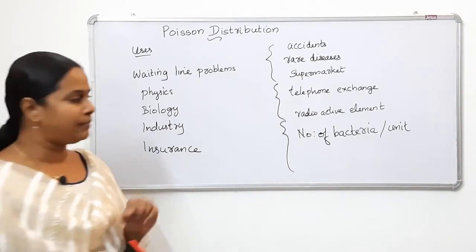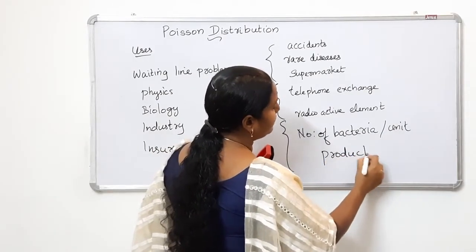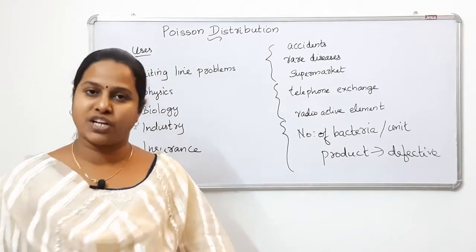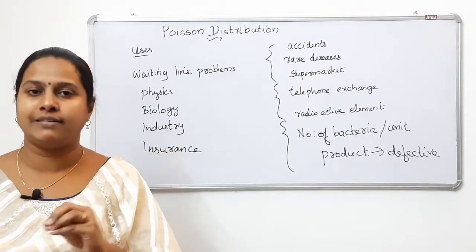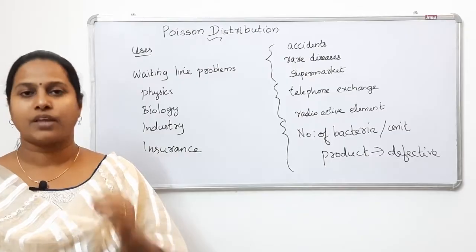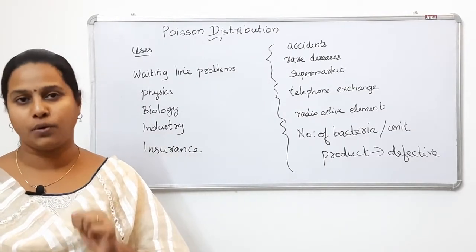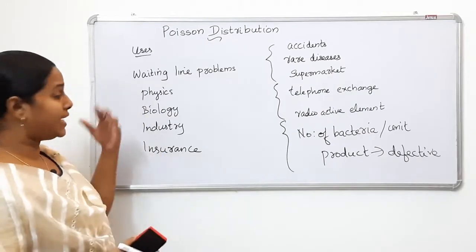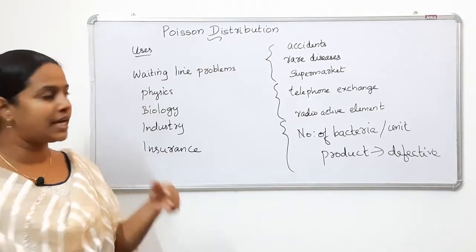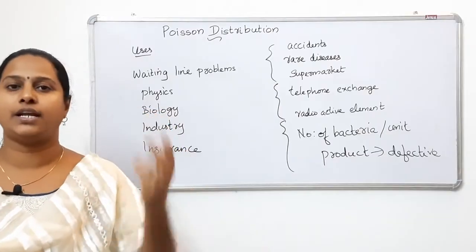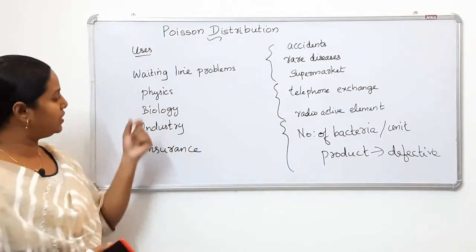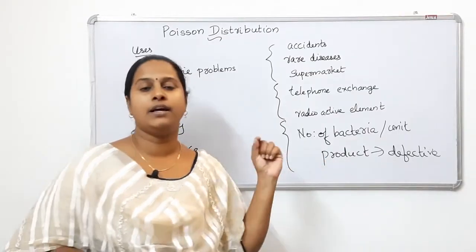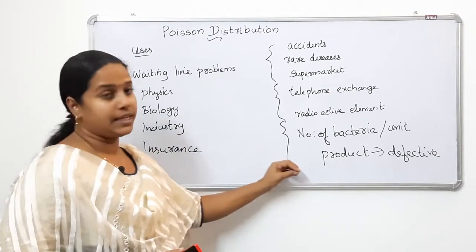Now we have an application in industry. We have a product manufactured. We count the number of defective items per unit. For that count, we use the Poisson distribution. Also in QAM theory, we have defective problems — defective elements, disintegration per unit, bacteria per unit. These are counted using the Poisson distribution.